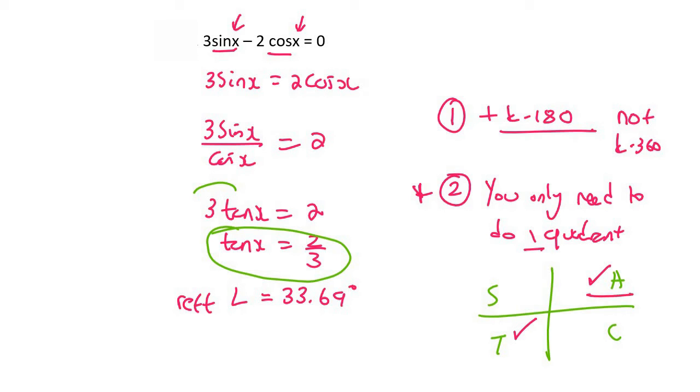So I'm just going to do the first one which is quadrant number one and so I can just say x equals 33.69. Now quadrant one you don't say 180 minus, 180 plus or 360 minus. You just put the reference angle straight away and then you go straight into plus k times 180, not 360, and then k is an element of z.